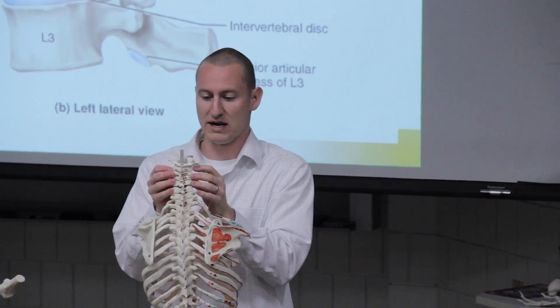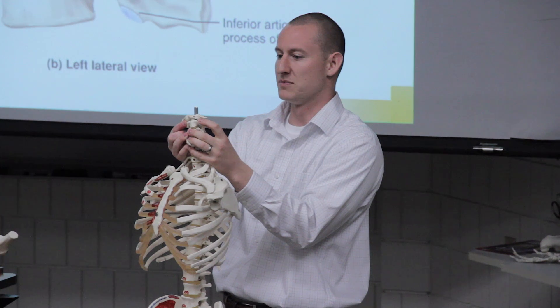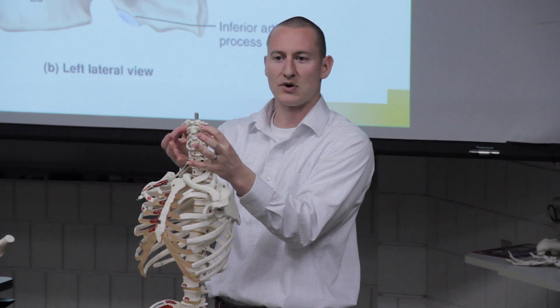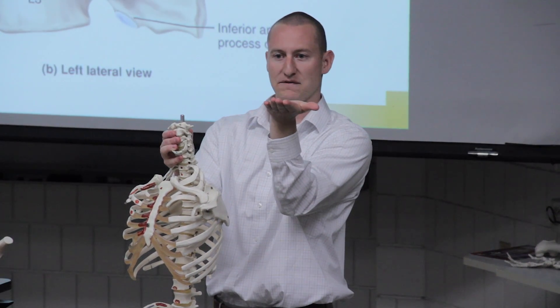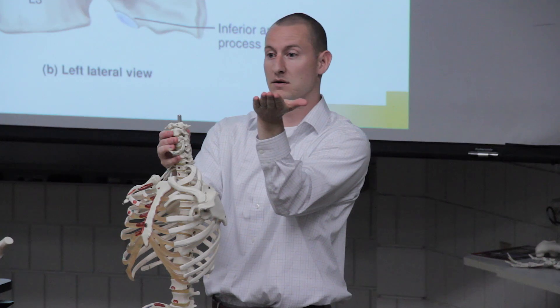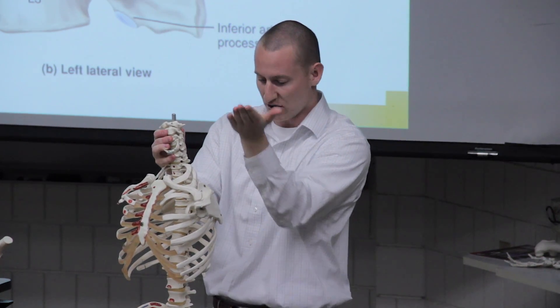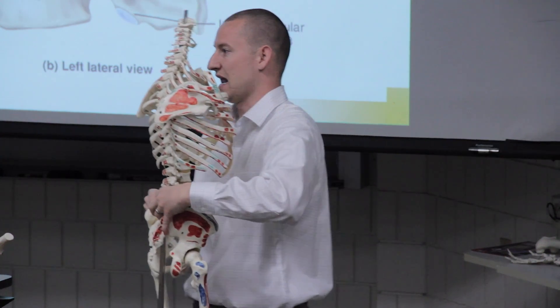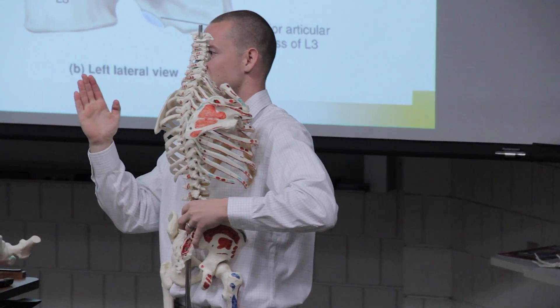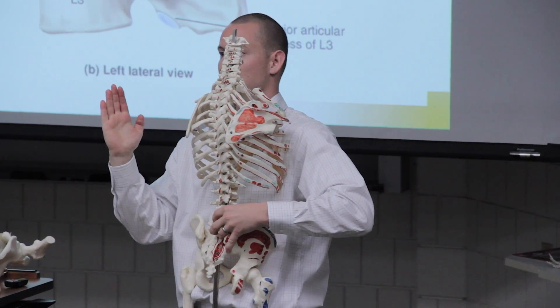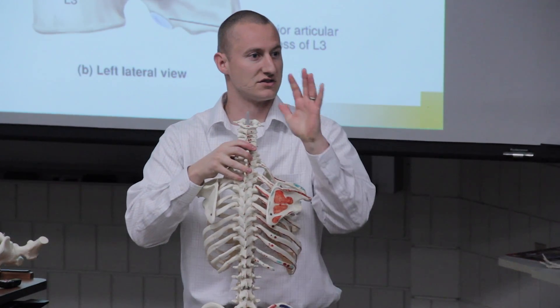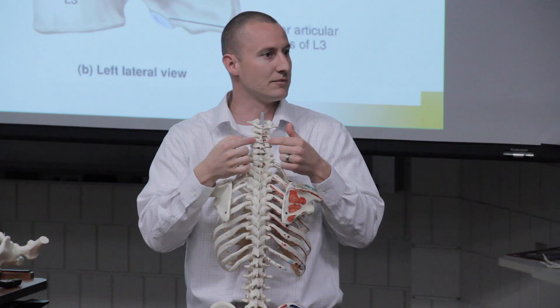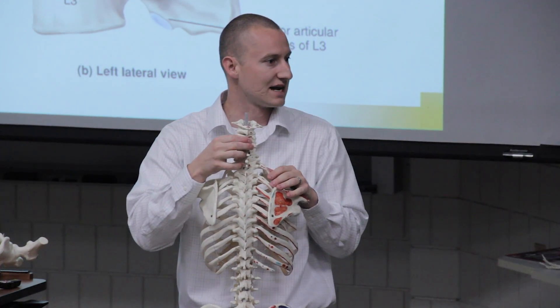If you look all the way up at the cervical column — and for those of you in the back you may have to come down after class to look at this a little closer — there are articulating processes that are pointed more or less in a flat upward direction. As you work your way down to the lumbar region, notice that these processes are actually angled more in a straight line in the sagittal plane. As you work your way down throughout the spinal column, there are slight movements in those articulating processes that allow for specific types of motion.